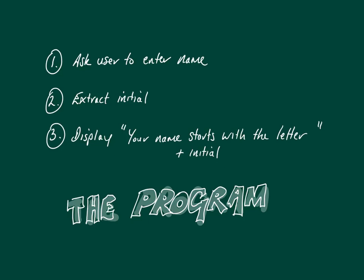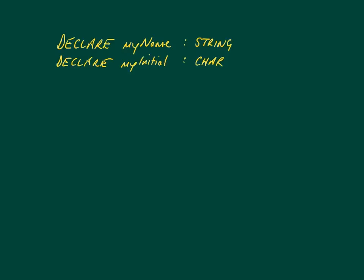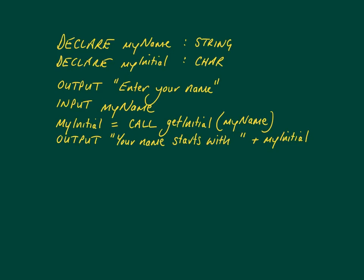So this is the program we're going to create. I'm going to show you how to solve step two using a function in the first instance and then using a procedure in the second instance. By showing you the same program implementing a function and then implementing a procedure, hopefully you'll understand the difference between them and how you can construct them. Let's start by declaring our variables, then the main program, and then we're going to create the function called 'my initial'. Let's start with the stub of the function - that's the function header and the end function part of the code.